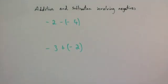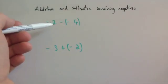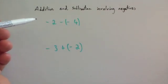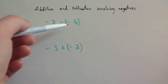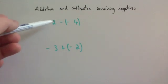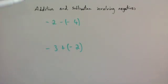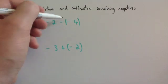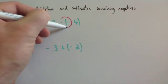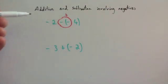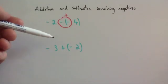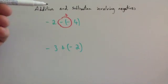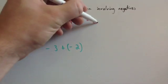We've got two more examples. Minus 2 subtract minus 4. You've got two signs here directly beside each other. Notice the minus sign in front of 2 is not directly beside another sign, so we leave that as it is. We replace the two minuses with a plus, so the sum becomes minus 2 plus 4. Counting 4 from minus 2: minus 1, 0, 1, 2. So the answer is 2.